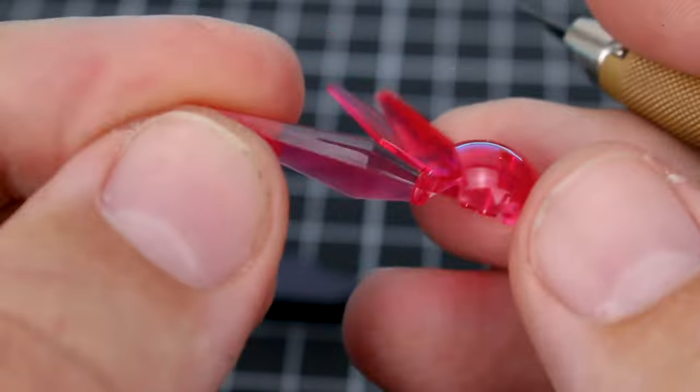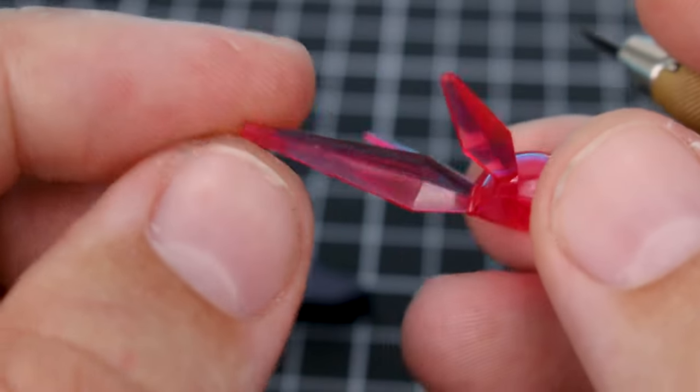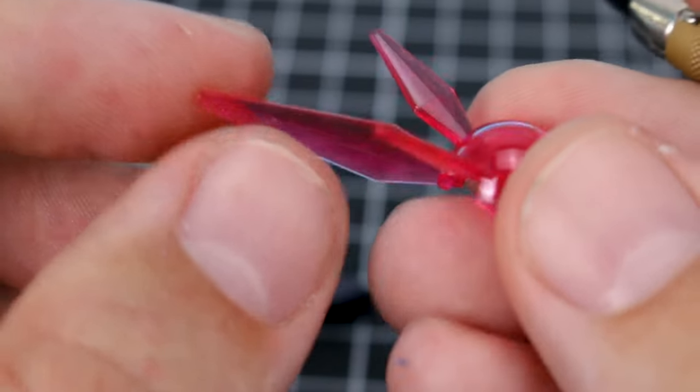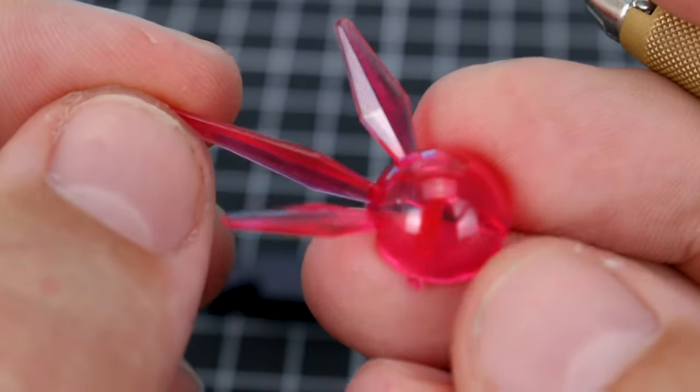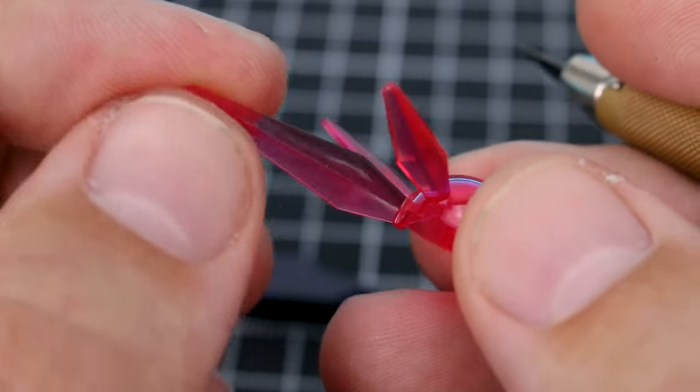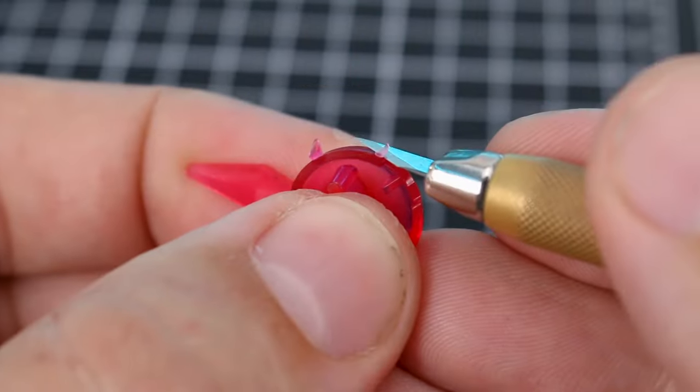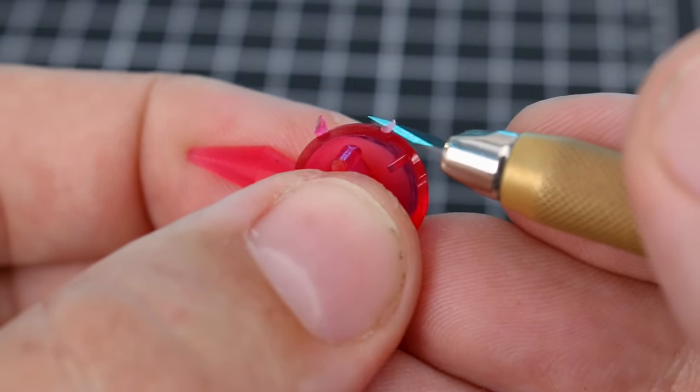That said, for clear parts like this beam effect part, you're not really going to be able to sand this very easily without ruining the finish. There are ways that you could sand it and then go back with polishing compound and make it shiny and clear again, but I would advise just some careful knife work for the best results.